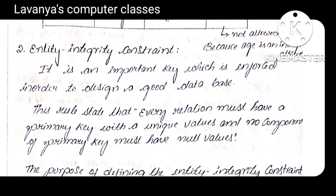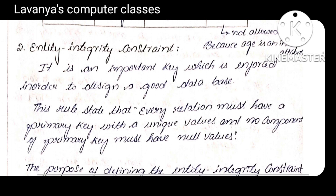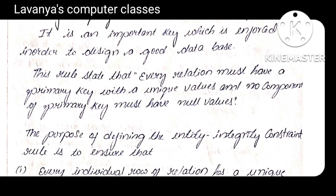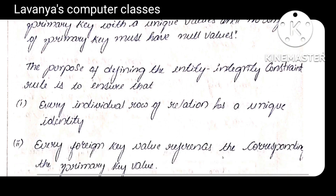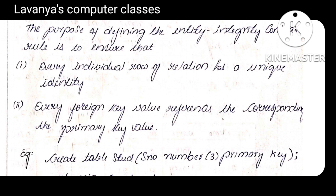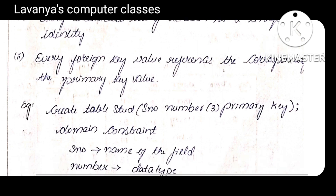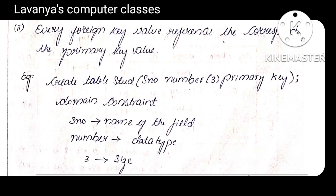Entity integrity constraint: if we apply any constraint on a row-wise basis — the row is called an entity — that constraint is called entity integrity constraint. It explains that no two records are the same. To ensure unique values are accepted without duplicates, we use a primary key. Primary key is used for enforcing entity integrity constraint. Example: CREATE TABLE student (serial_number NUMBER(3) PRIMARY KEY). SNO NUMBER(3) comes under domain constraint; PRIMARY KEY comes under entity integrity constraint.